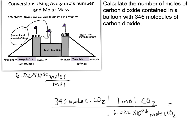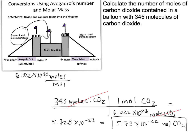That gives us 5.728 times 10 to the negative 22nd. To the appropriate number of significant figures — we have 3 sig figs — that gives us 5.73 times 10 to the negative 22nd. Then we check our units: molecules of CO2 and molecules of CO2 cancel out, so moles of CO2 are left over. Our final answer is 5.73 times 10 to the negative 22nd moles of CO2. So 345 molecules of CO2 gives you a very small quantity of moles.